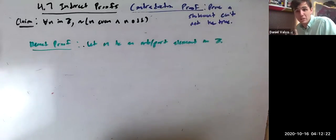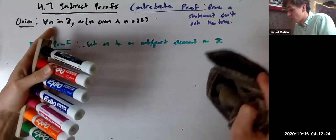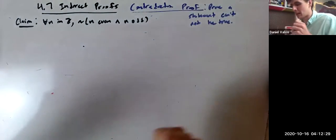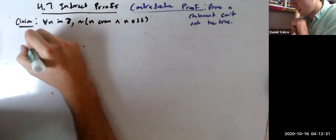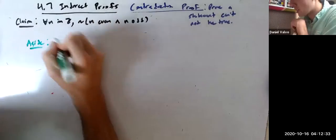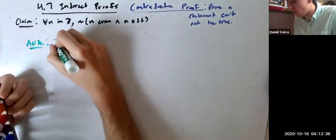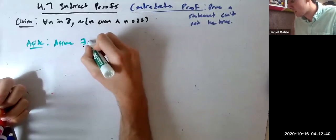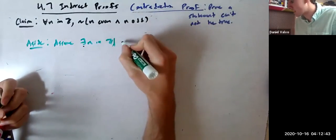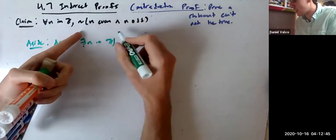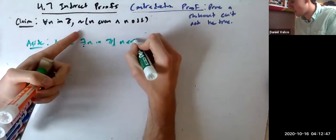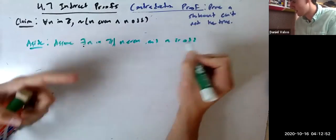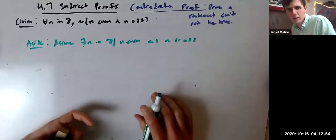How do we do that? Assume it's not true. Assume the statement is false. For contradiction proof, you assume it's false. So assume there exists an N in Z such that N is even and N is odd.